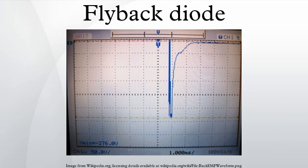A flyback diode is a diode used to eliminate flyback, which is the sudden voltage spike seen across an inductive load when its supply voltage is suddenly reduced or removed.